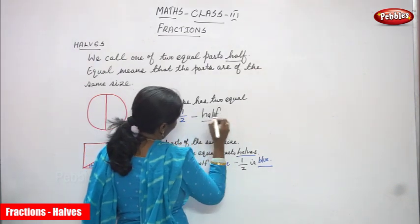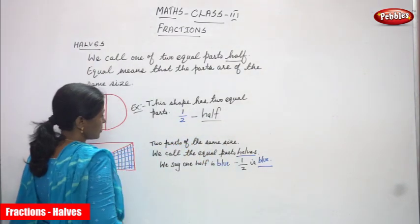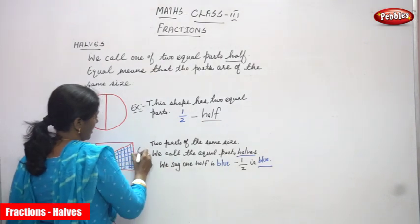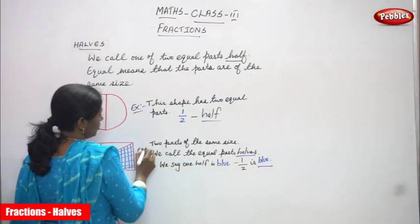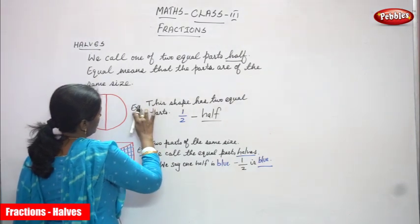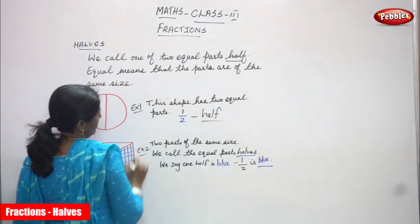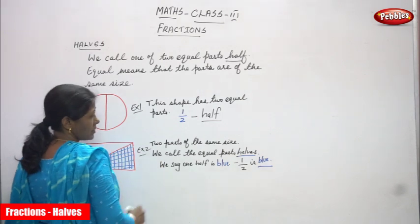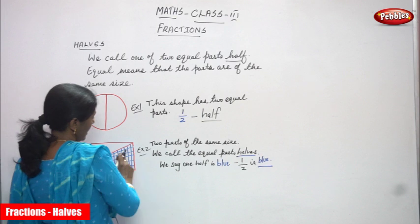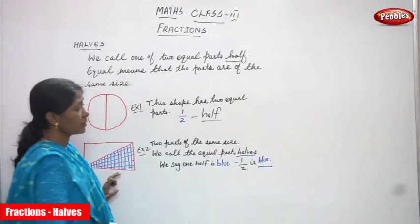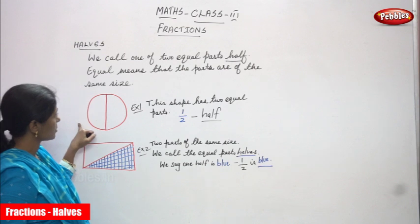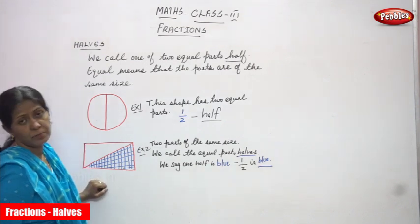Half is spelled H-A-L-F. Two parts of the same size we call equal parts. This is example 1 and this is example 2. Two parts of the same size, we call the equal parts, called as half. We say one half is blue — that half part is shaded in blue color. This is a circle and this is a rectangle shape. I think you understand.